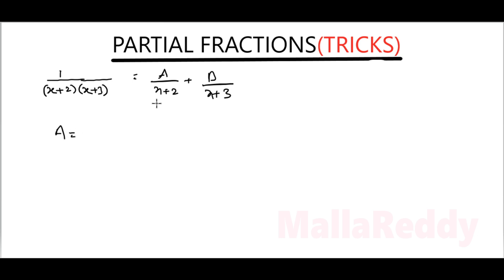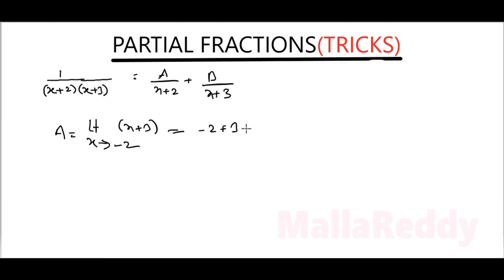A is found by multiplying (x+2) and taking the limit x tends to minus 2. Substituting minus 2: minus 2 plus 3 equals 1, so A value is 1. Now we find the value of B.